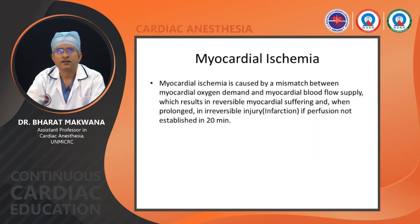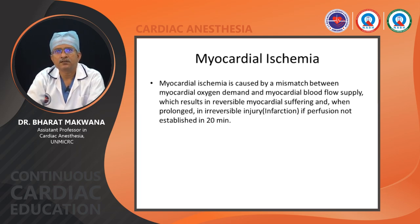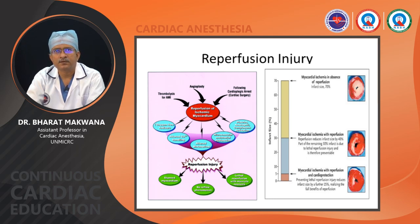Myocardial ischemia is caused by a mismatch between myocardial oxygen demand and myocardial blood flow supply, resulting in reversible myocardial damage initially and irreversible injury when prolonged beyond 20 to 30 minutes without reperfusion. If recirculation happens within the reperfusion window of 20 to 30 minutes, reperfusion injury can develop.